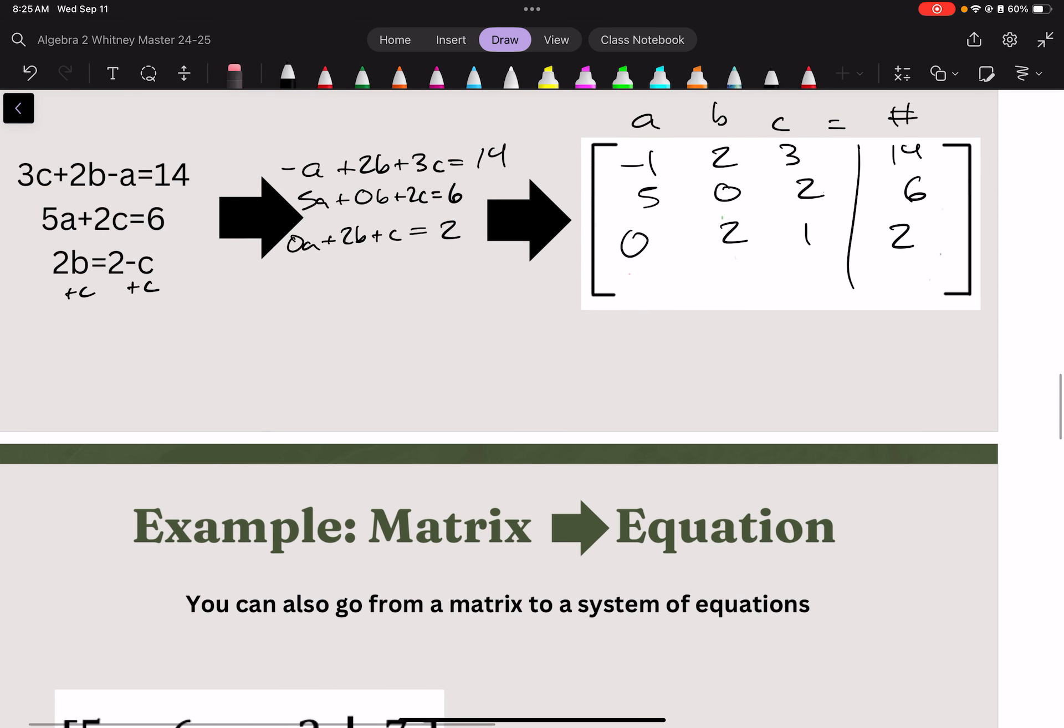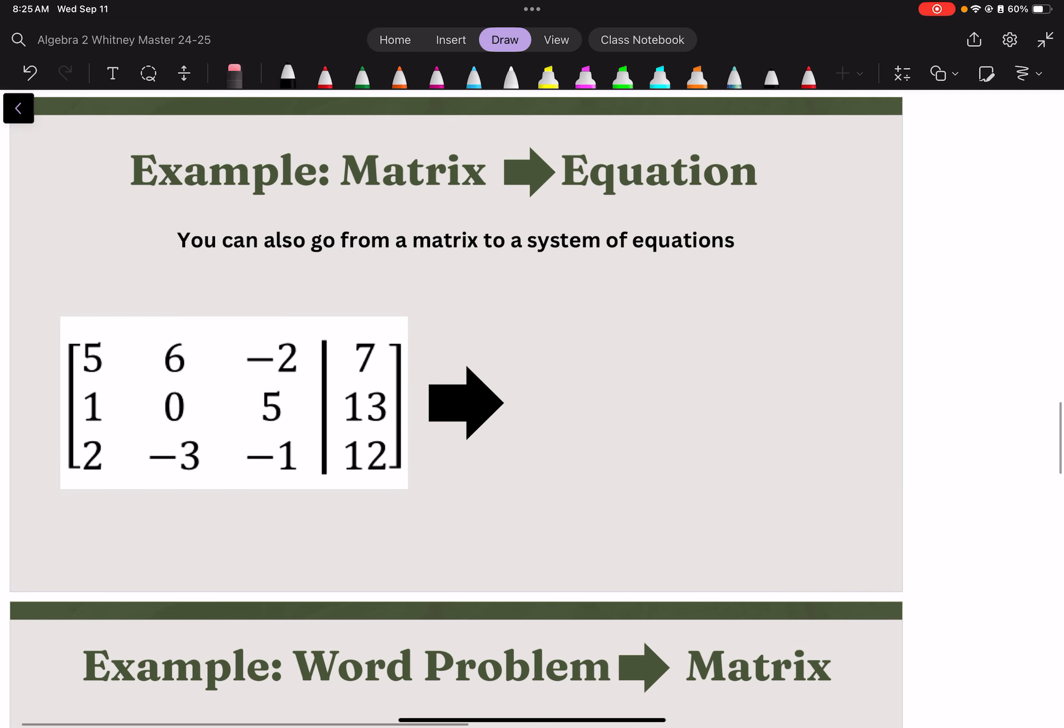We can also go the other way around. We can take a matrix and create a system of equations. Now, I'm going to say this is x, y, and z. So, I have 5x plus 6y minus 2z equals 7. I have 1x, no y, plus 5z equals 13. I have 2x minus 3y minus 1z equals 12.